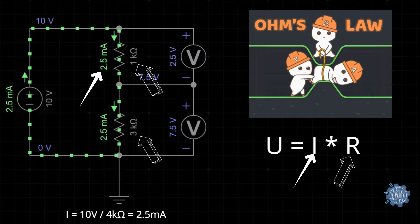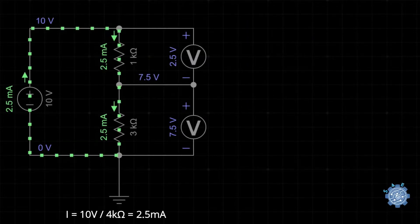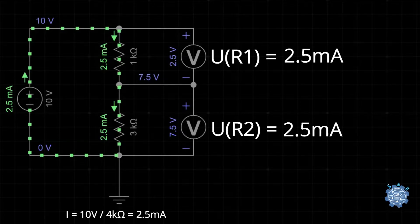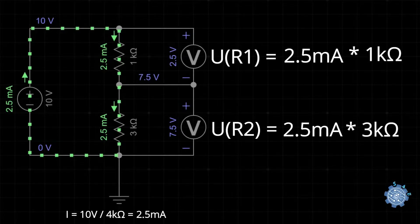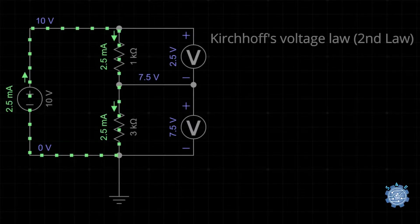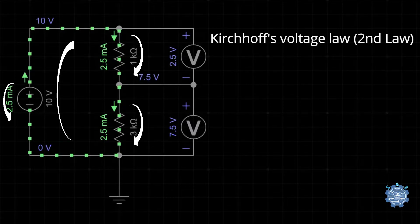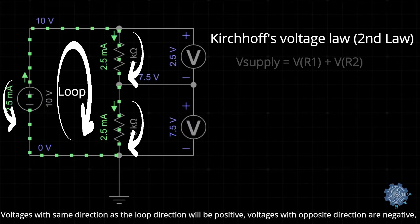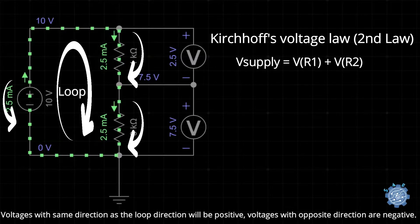Therefore, a simple way to see how much voltage drops on each resistor is to multiply the current value with the resistance value. According to Kirchhoff's second law, the voltages in a loop will be equal to zero, so the voltage from the supply should be equal to the sum of the voltages dropped on both resistors.